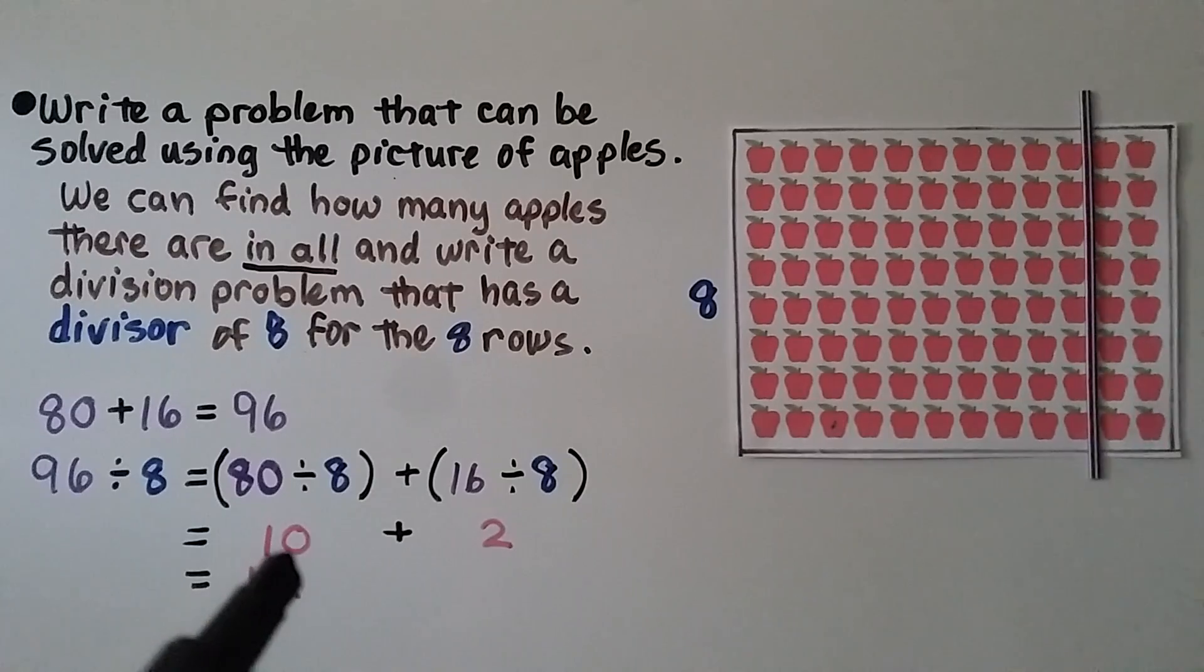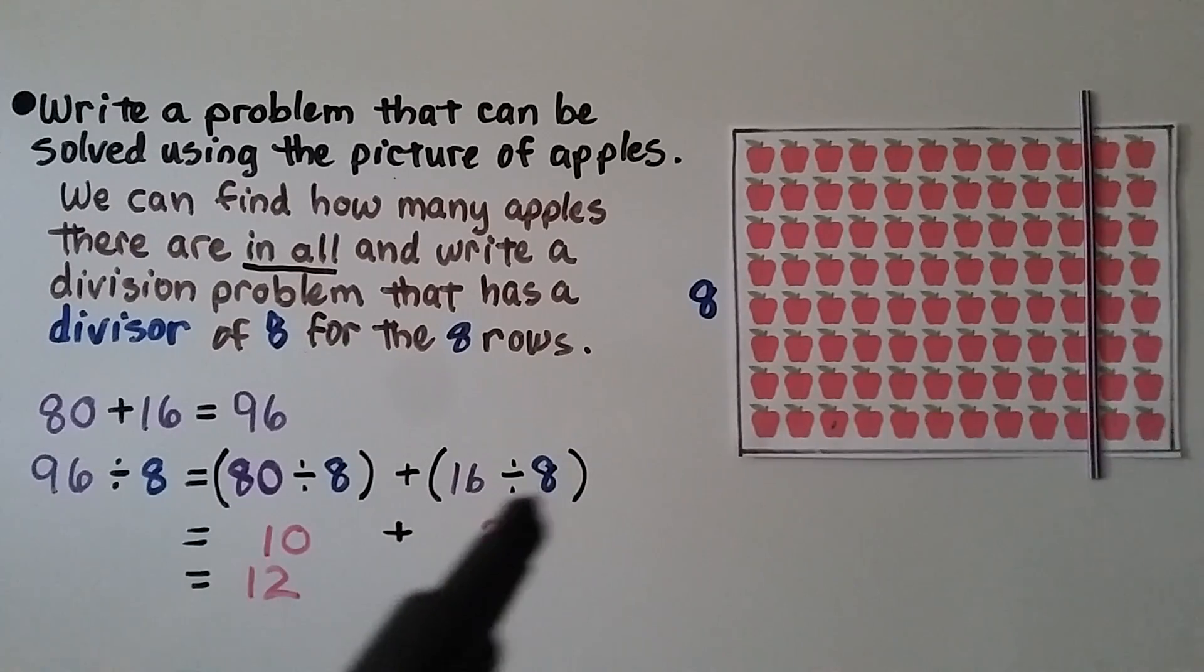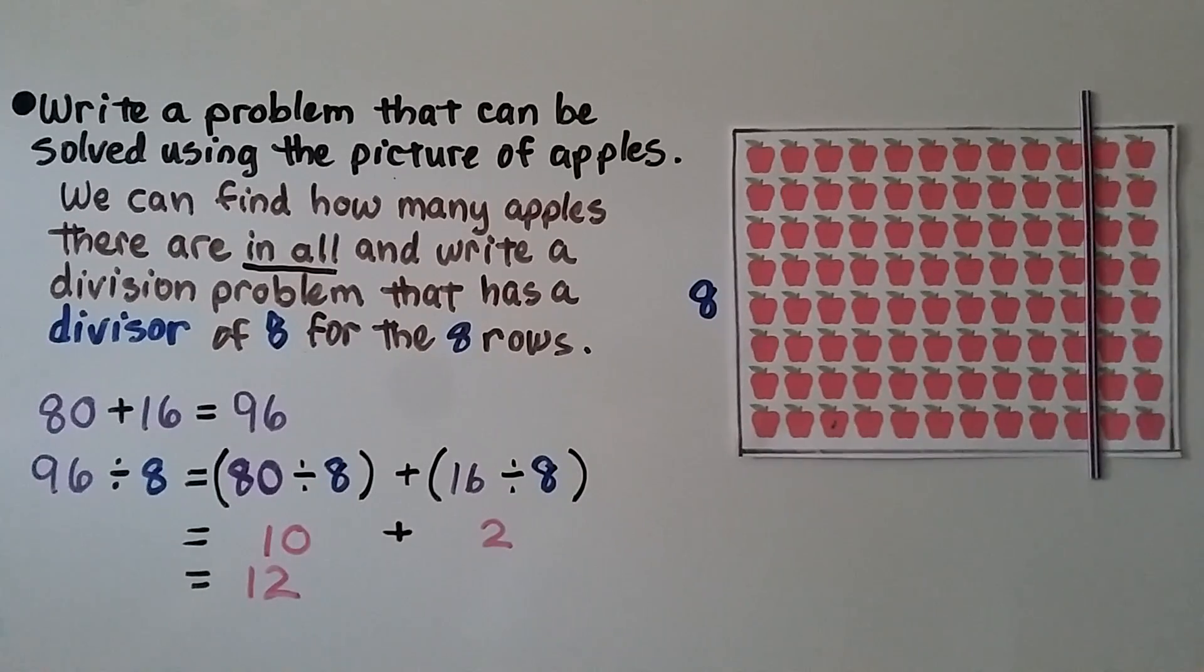80 divided by 8 is equal to 10. 16 divided by 8 is equal to 2. We add the 2 quotients, and we get 12. So we wrote a problem that matched the picture of apples as 96 divided by 8 is equal to 12.